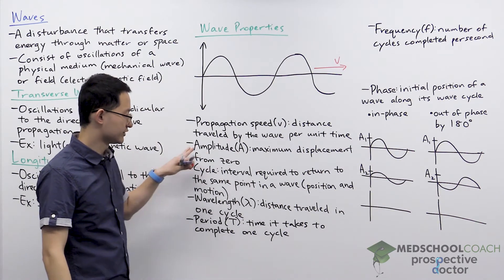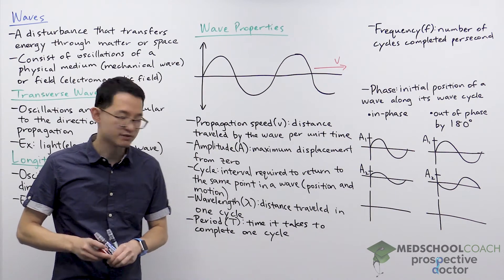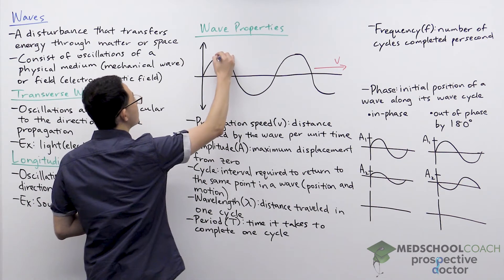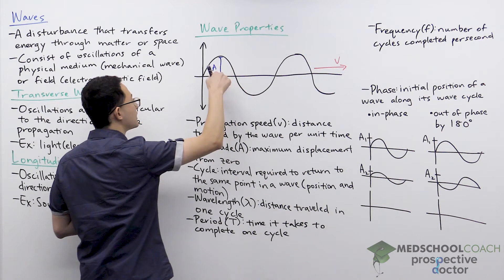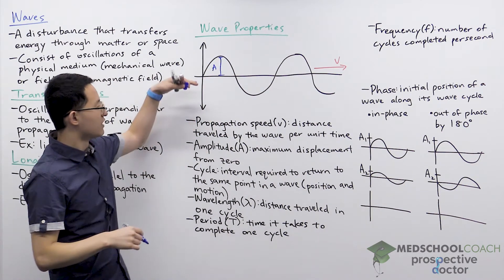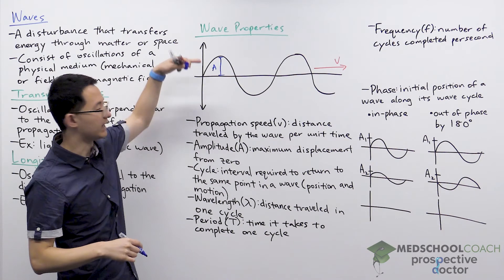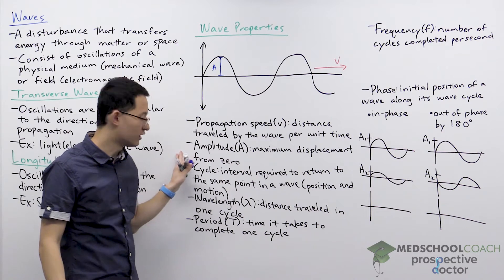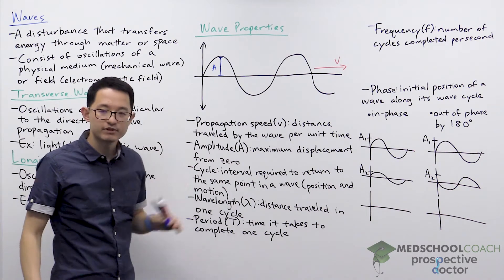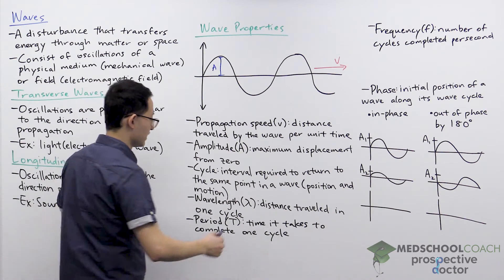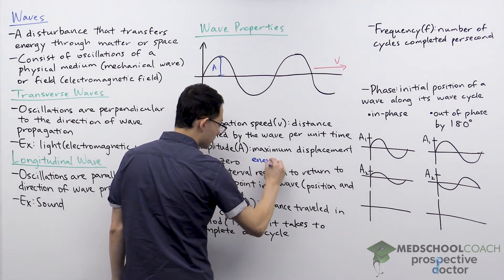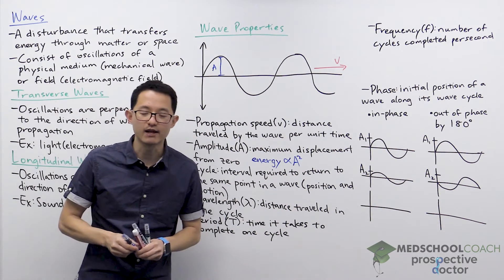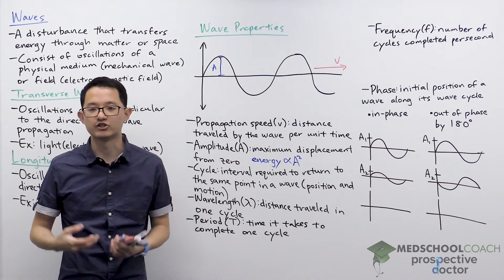Amplitude is the maximum displacement from zero — from the x-axis. We oscillate between positive A and negative A, the maximum displacement. Importantly, the energy of a wave is directly proportional to the amplitude squared. So the greater the amplitude, the greater the energy of that wave.